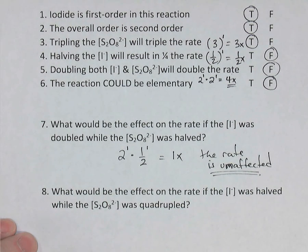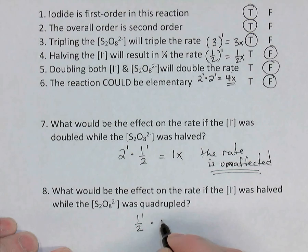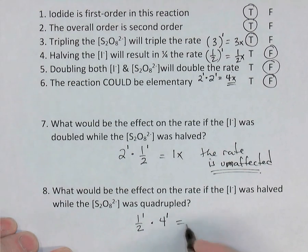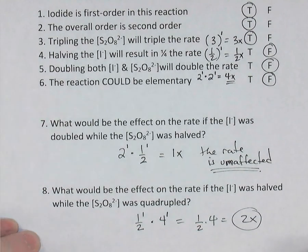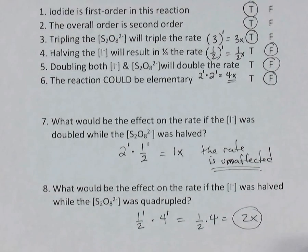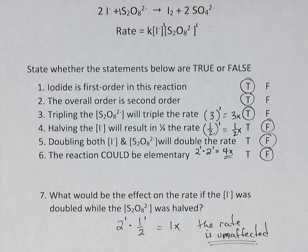What would be the effect on the rate if iodide was halved and S₂O₈ was quadrupled? Iodide: (½) to the power of 1, times S₂O₈: 4 to the power of 1. That gives one-half times 4 — double the original rate. So the final rate will be twice the original rate. Those are some ways to apply and interpret rate laws — predicting the effect of concentration changes and connecting the rate law to the reaction's mechanism to decide if it could be elementary.